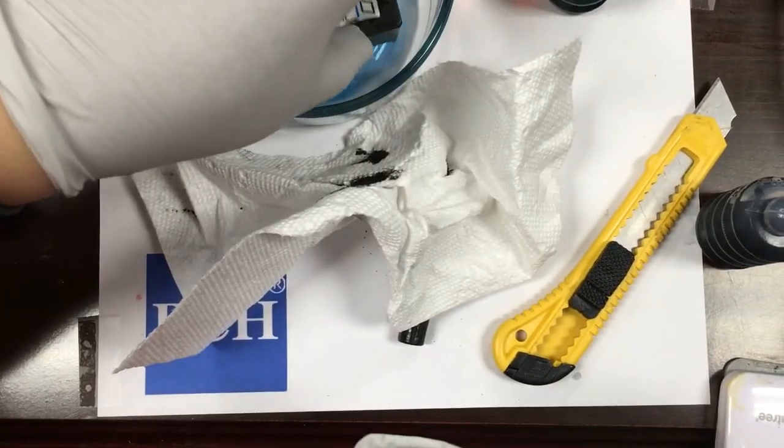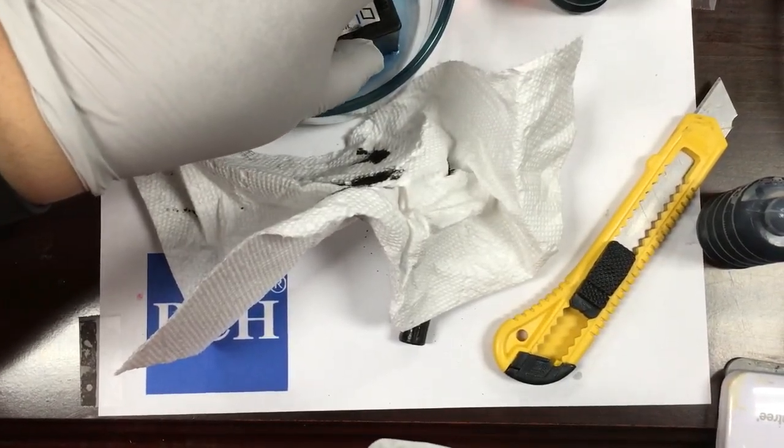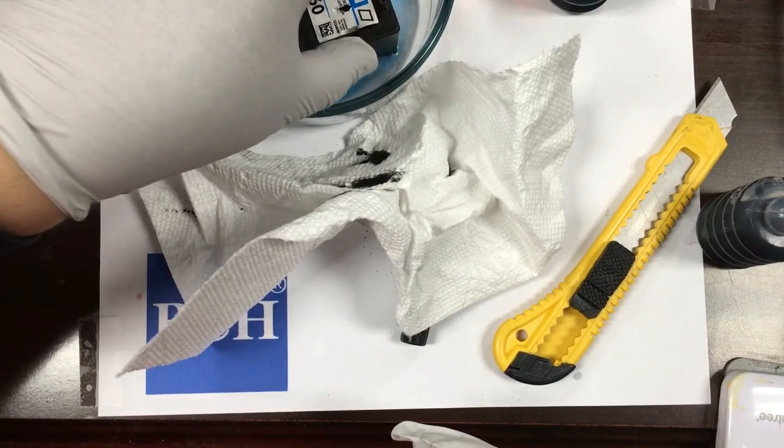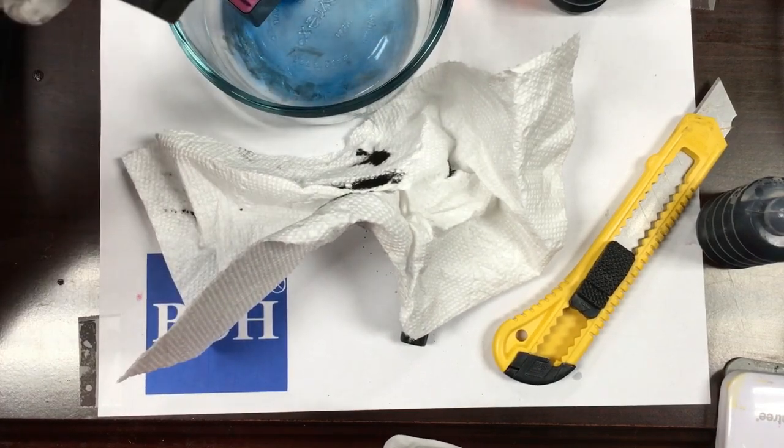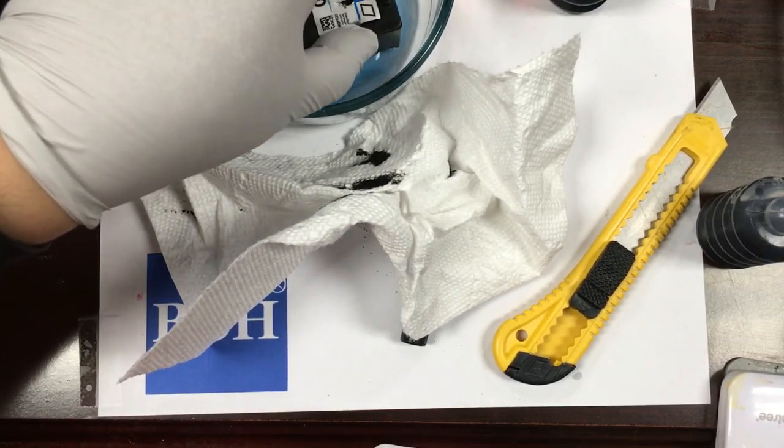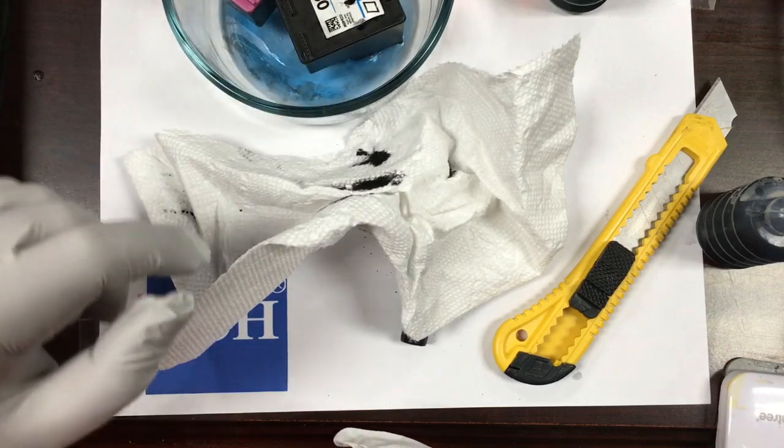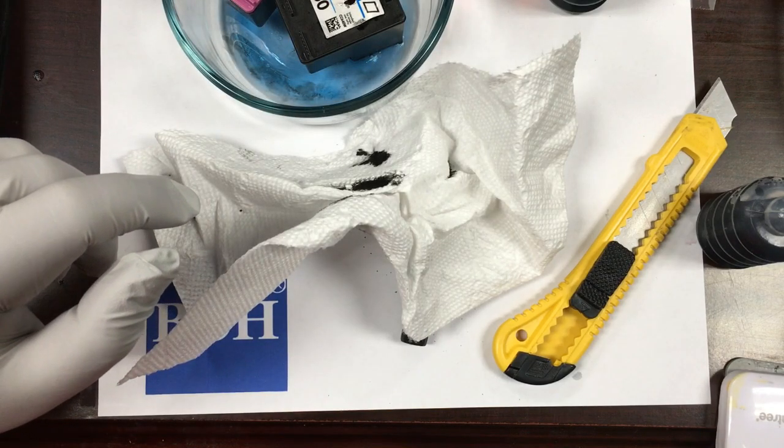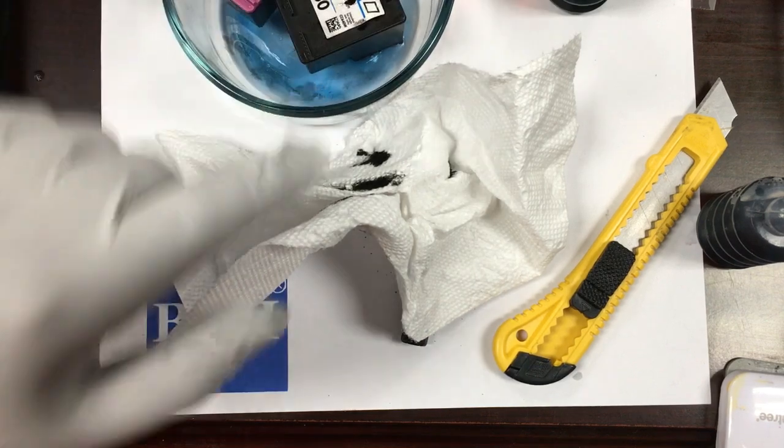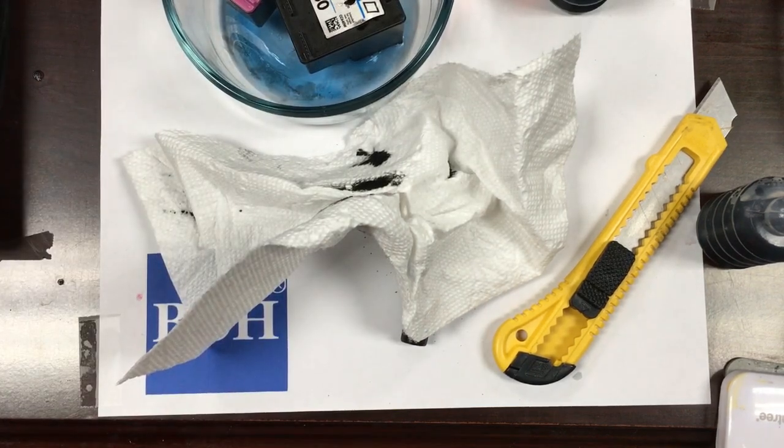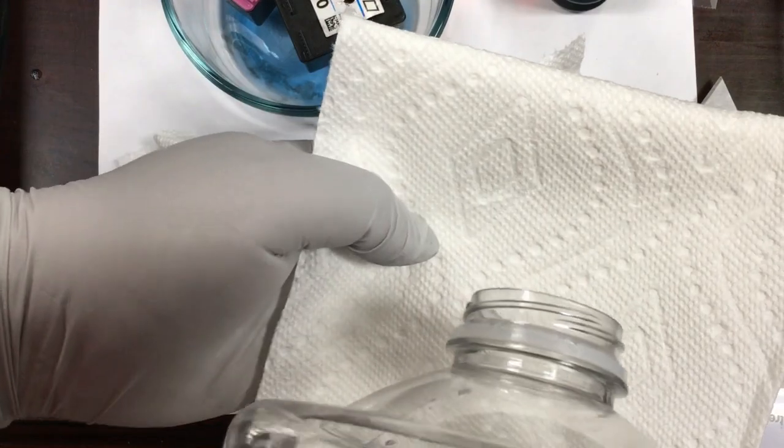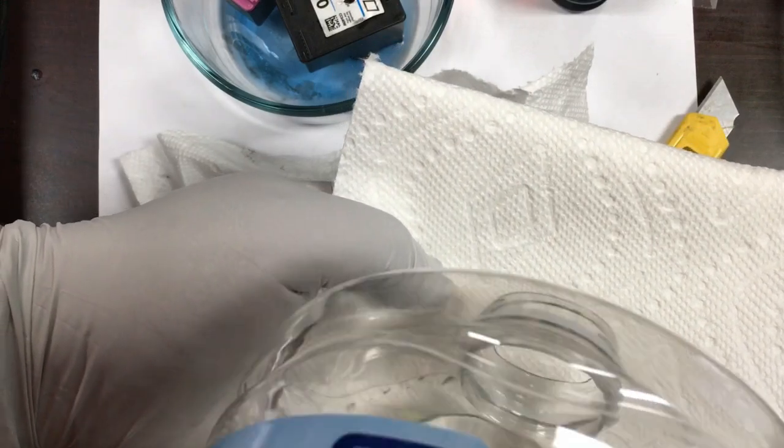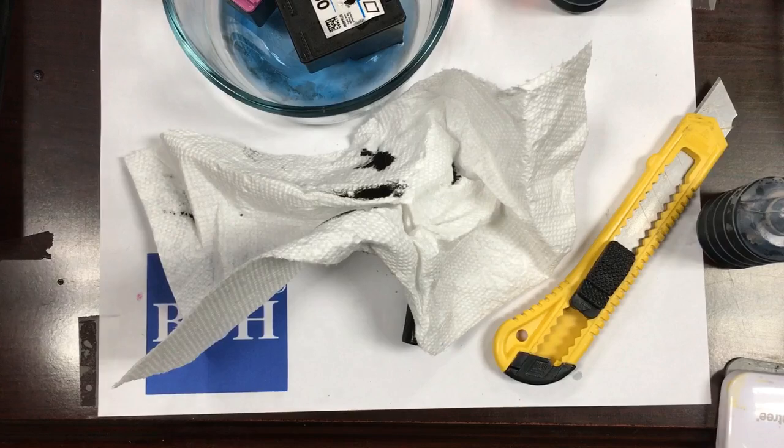You can see the black cartridge is completely dried. Even when we add the ink, there's absolutely no ink comes out. Here's where we're going to use the priming syringe to unclog it. However, let me show you how to do it without a priming syringe.